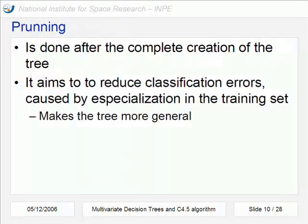In this case the pruning is done after the complete creation of the tree. And the aim is to reduce classification errors that are caused by specialization in the training set. The general aim is to make the tree more general.